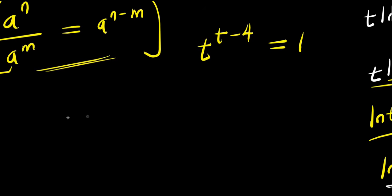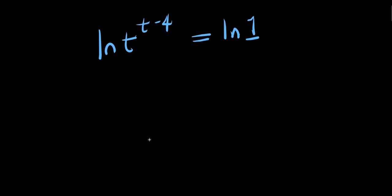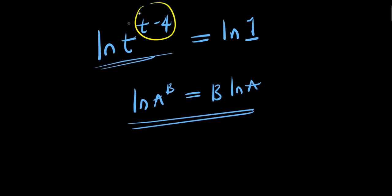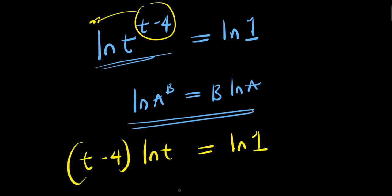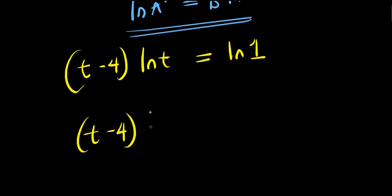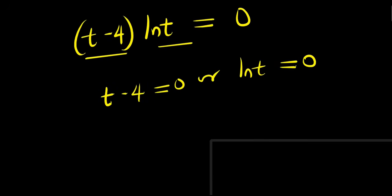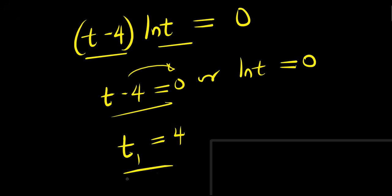Applying natural log to both sides: ln of t to the power of (t minus 4) equals ln(1). Using the power rule, t minus 4 times ln(t) equals ln(1), which equals 0. Setting each factor to zero: t minus 4 equals 0 gives t equals 4, the same solution as before.